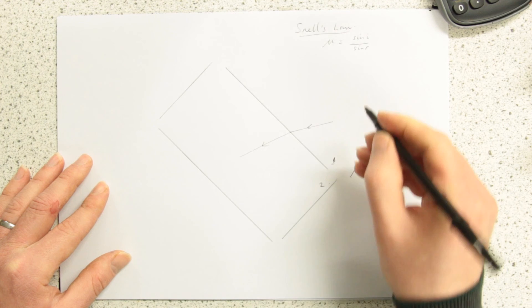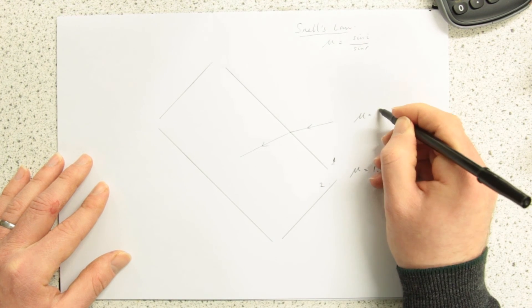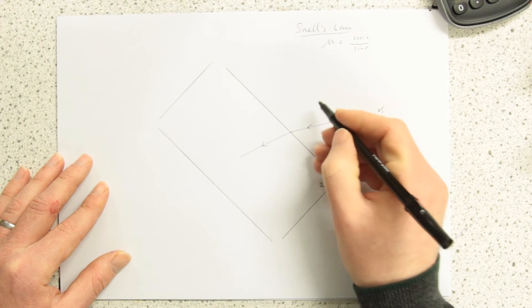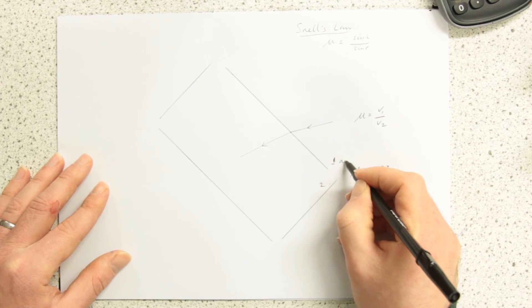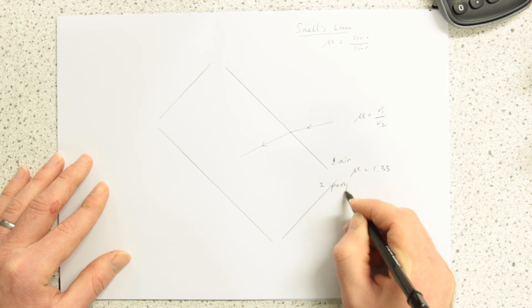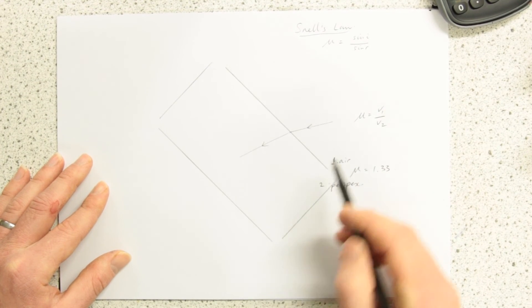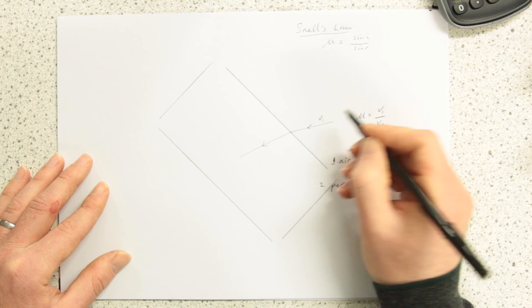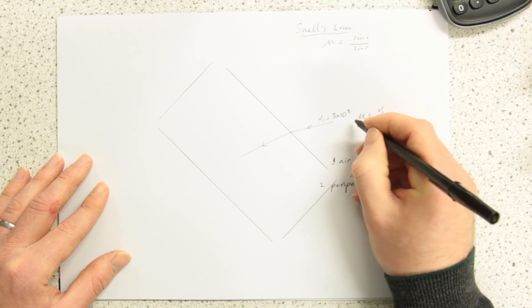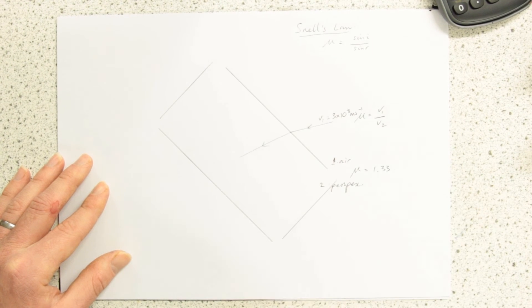We say that the refractive index, mu, equals the velocity in 1 over the velocity in 2. And we know the velocity in air, this is air out here, but we don't know the velocity in perspex. So we can actually use the velocity in air, which we know is the speed of light in a vacuum or in air, 3 times 10 to the 8 metres per second.